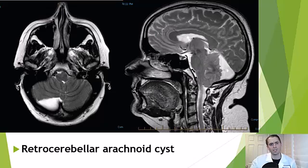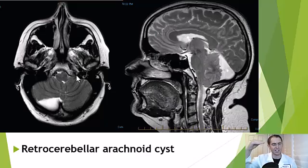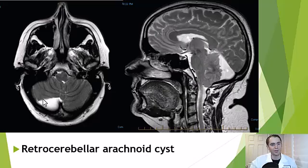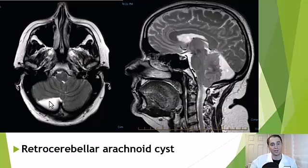These are fluid-filled spaces underneath the arachnoid matter, part of the meninges or coverings of the brain. On the left, you're looking at an axial image through the head. Here's the nose, and these are the ears. This is the medulla, and this is the cerebellum. You can see this T2 bright fluid-filled structure, which is a retrocerebellar, or behind the cerebellum, arachnoid cyst — a very common location.